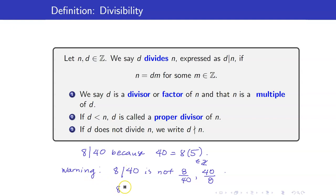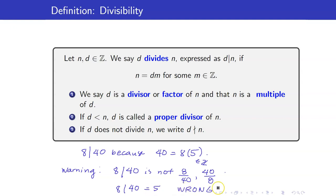For example, 8 divides 40 because 40 equals 8 times 5, and 5 is an integer. Note that the divisibility notation is not a fraction — it is not 8 over 40 nor 40 over 8. It simply states that 8 divides 40. Also, you cannot write '8 divides 40 equals 5' — that is wrong.